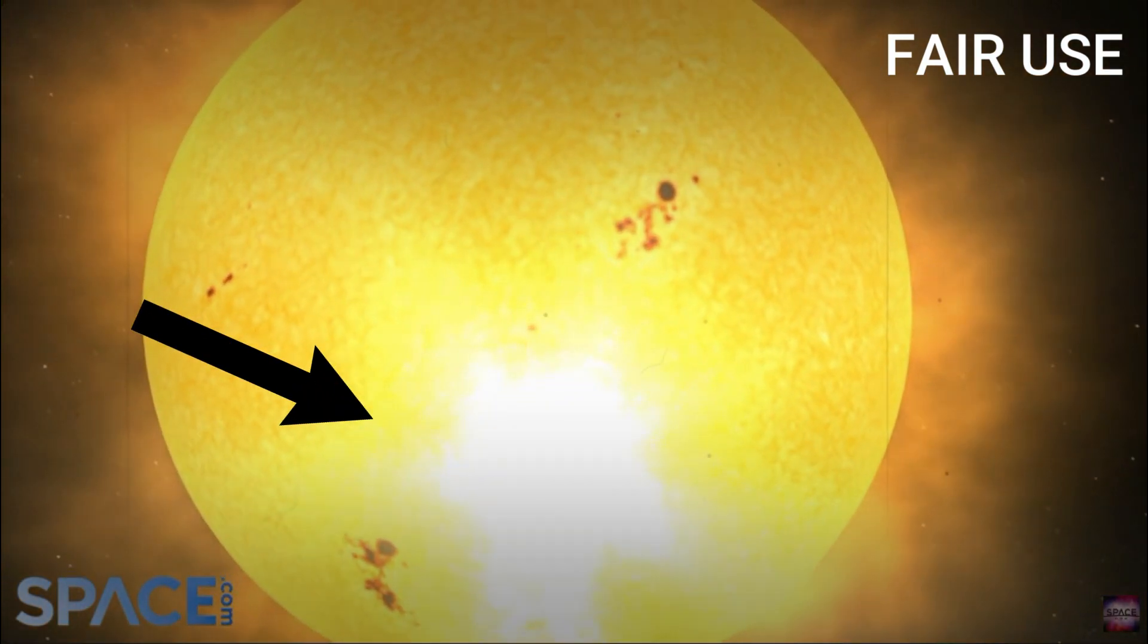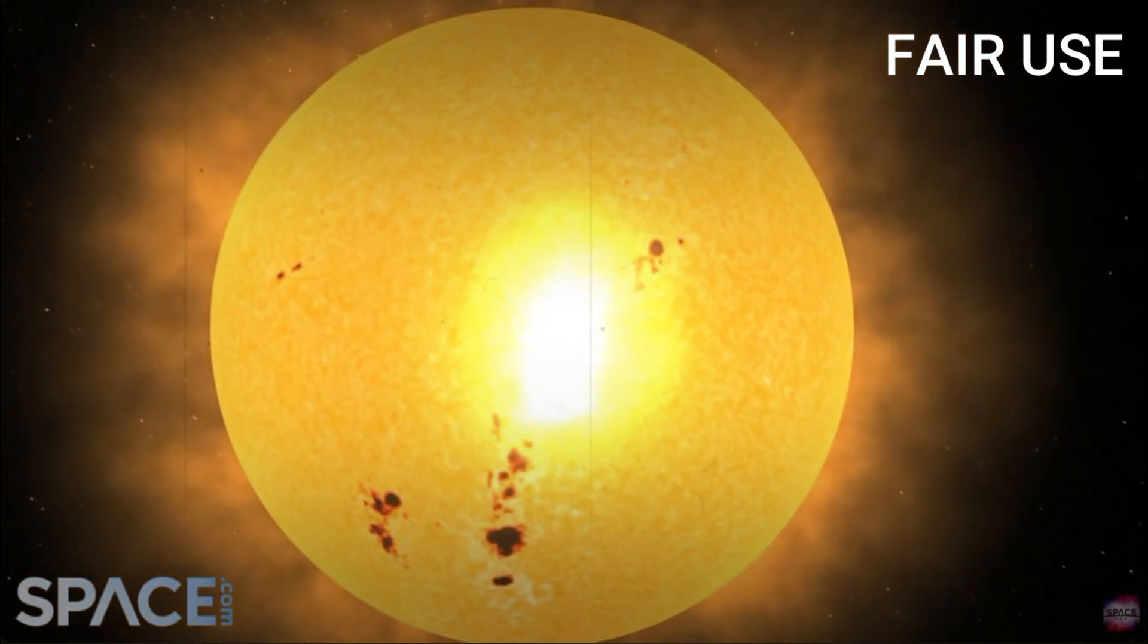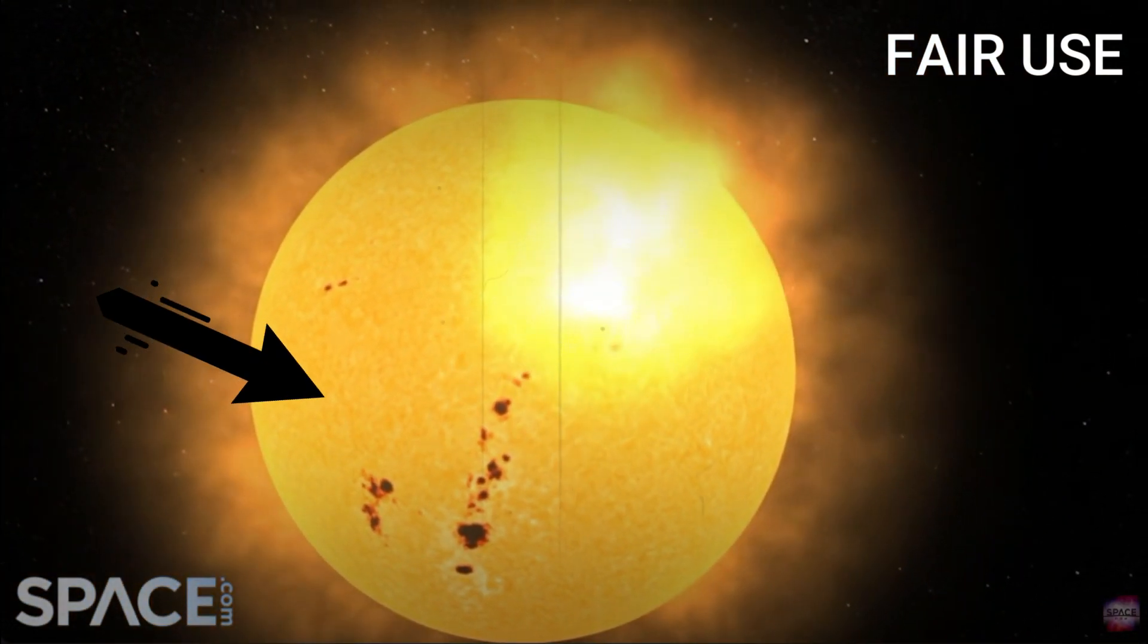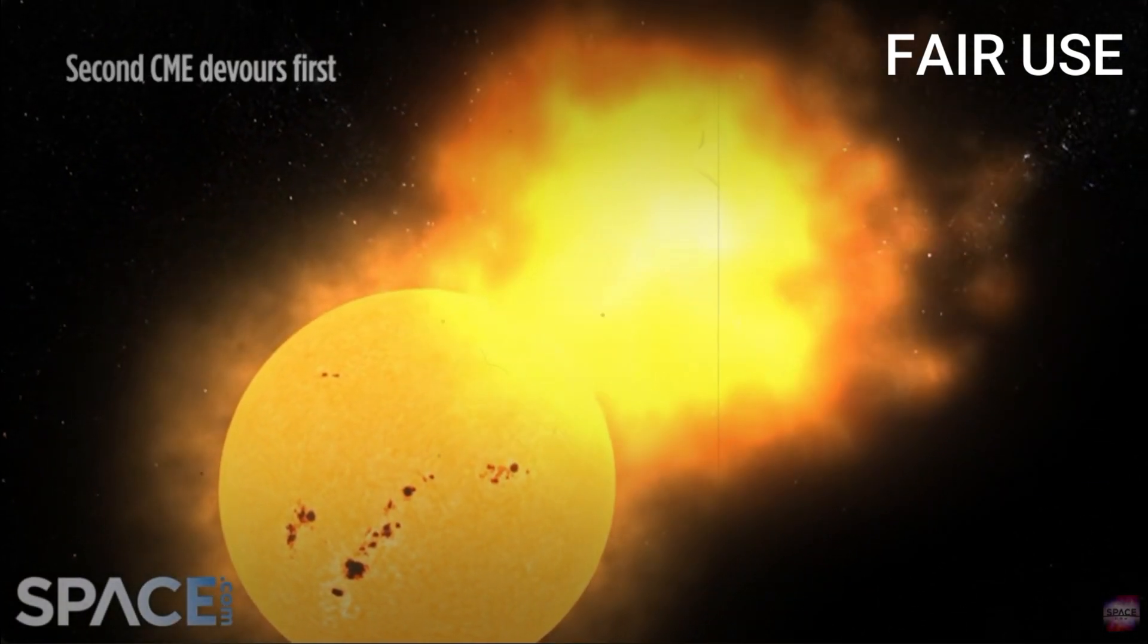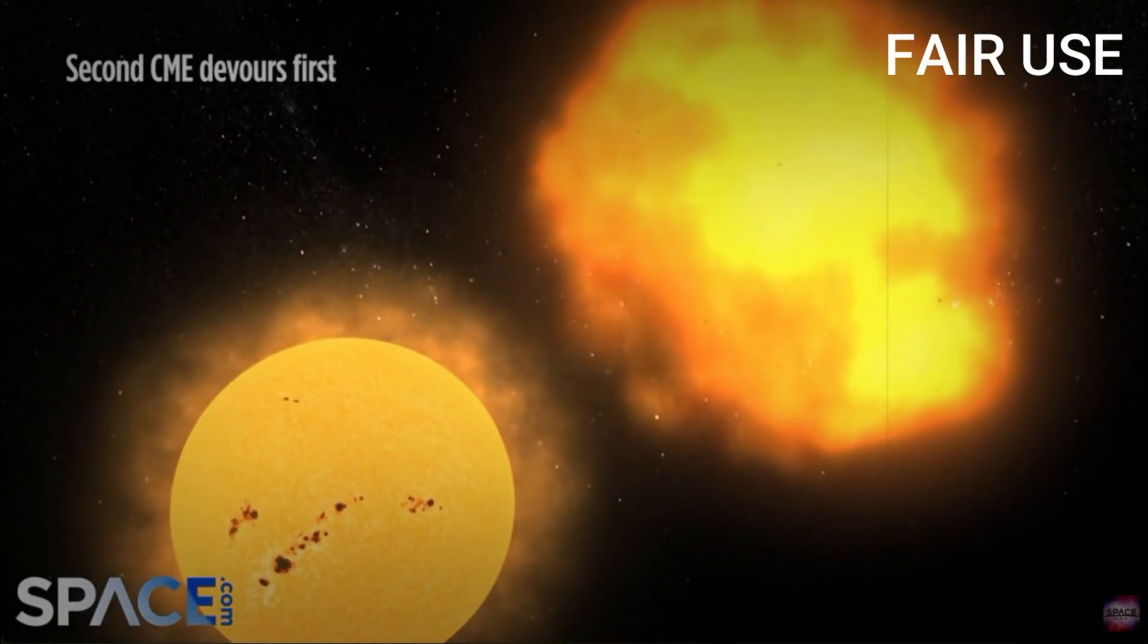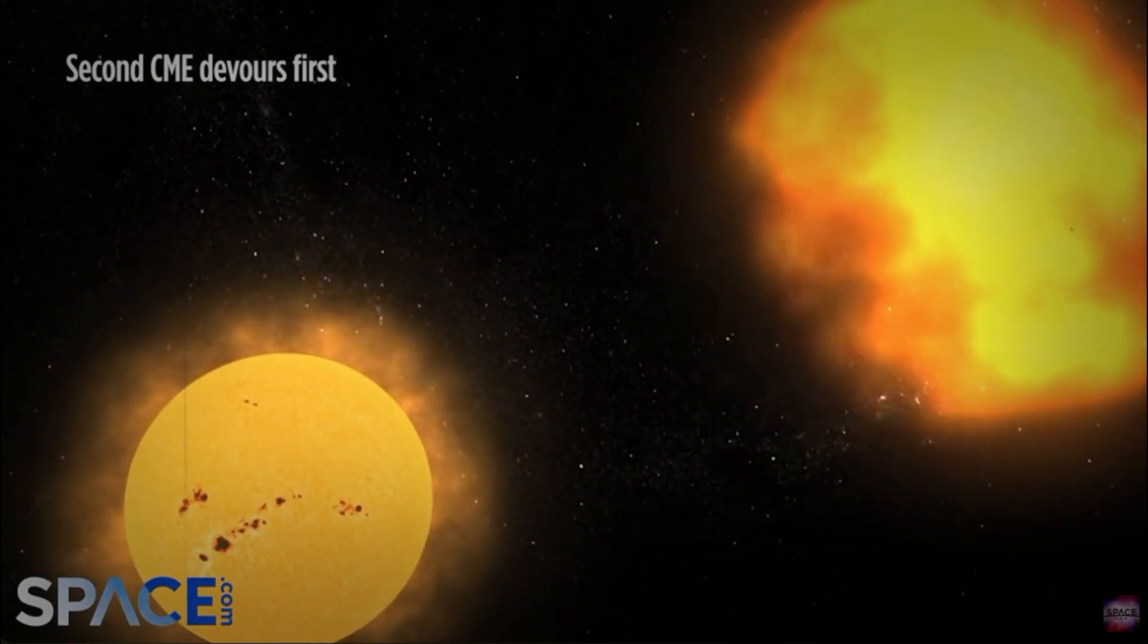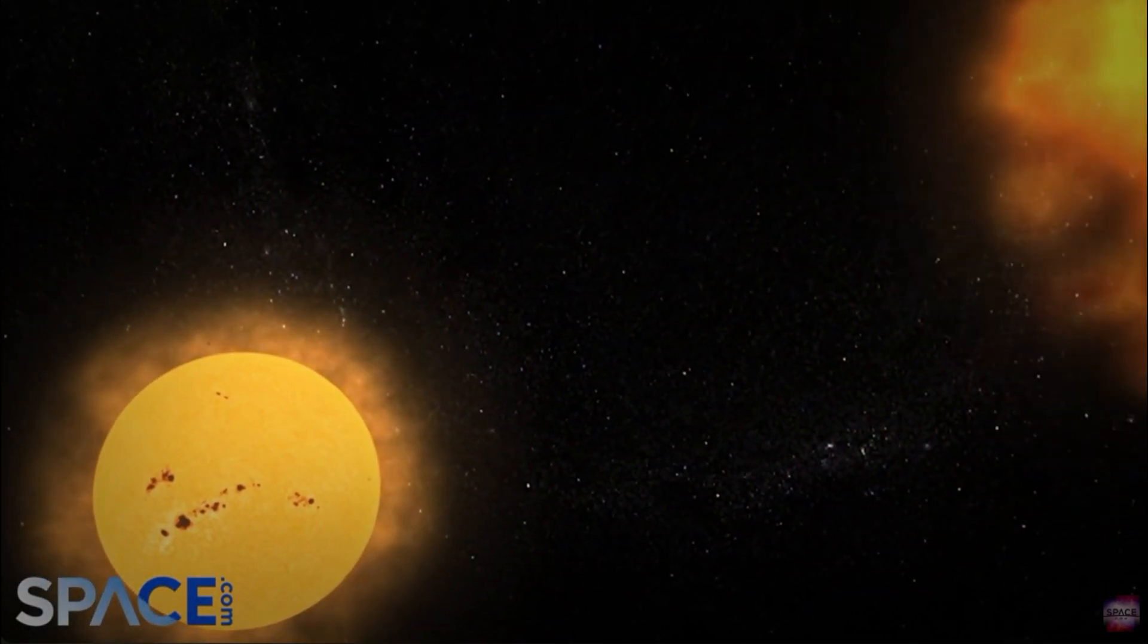Now think about that situation: not only do we have the power of one CME hitting Earth, but then we have a secondary one that will sometimes erupt behind the initial blast and actually be stronger than the first and overtake that leading blast, causing a much more harsh effect on Earth when it hits the magnetic field.